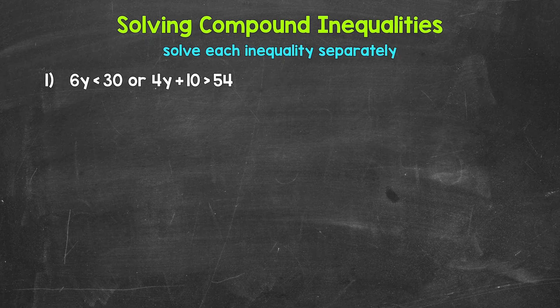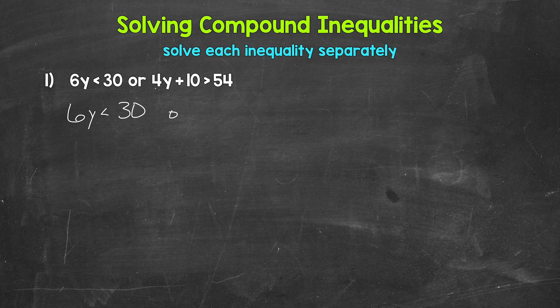Let's jump into number one, where we have 6Y is less than 30, OR 4Y plus 10 is greater than 54. When we solve a compound inequality involving OR, all we need to do is solve each inequality separately. So we need to solve 6Y is less than 30, then 4Y plus 10 is greater than 54.